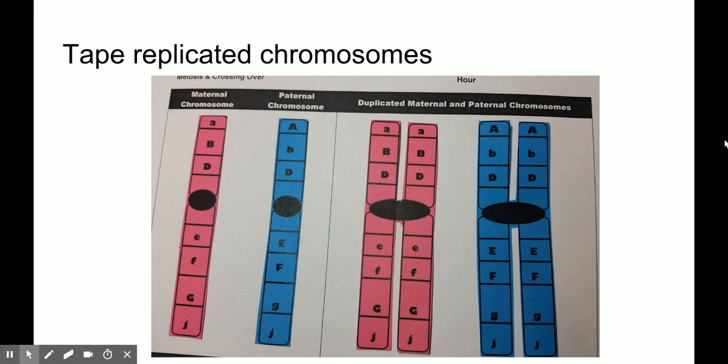Following that, we're going to add those replicated or duplicated maternal and paternal chromosomes. So take one of those and tape down under the maternal in the same order on the left and the paternal on the right so that you have represented DNA replication. Because this happens prior to meiosis. And once the cell enters meiosis, then these duplicated chromosomes are manipulated and changed. And we are going to show crossing over in this activity.